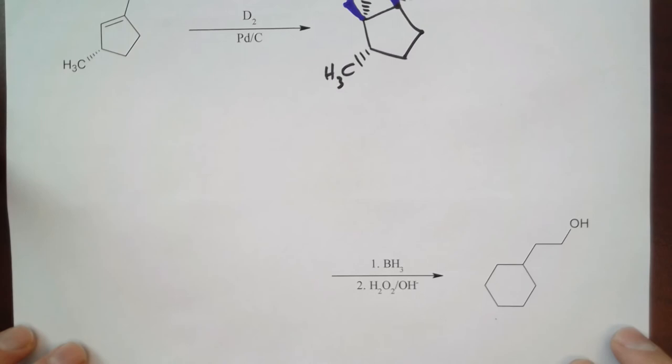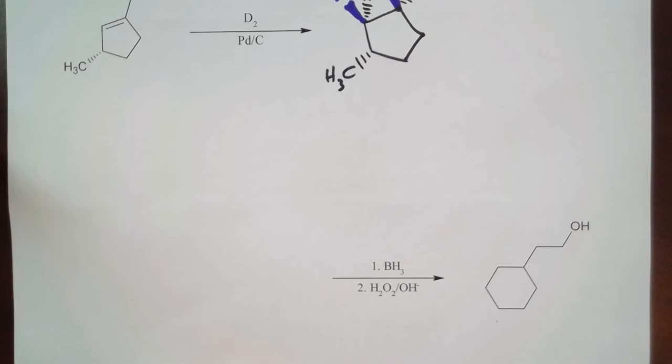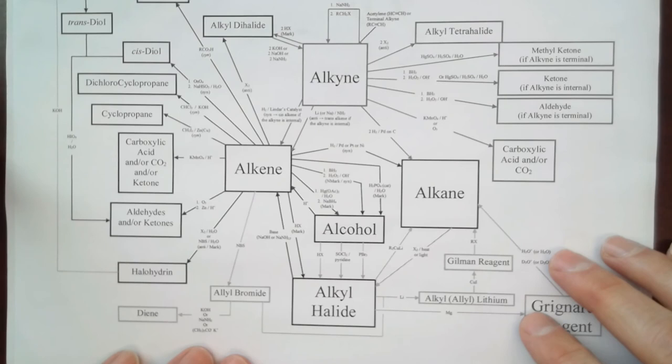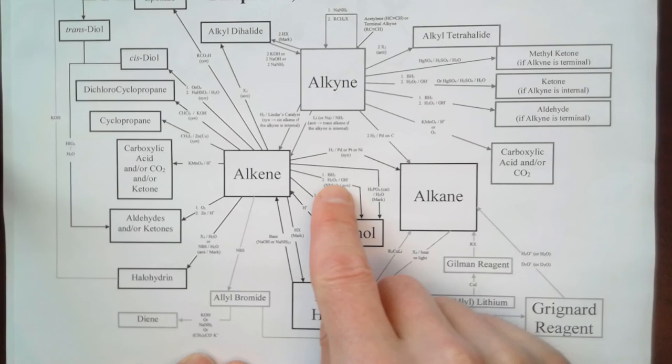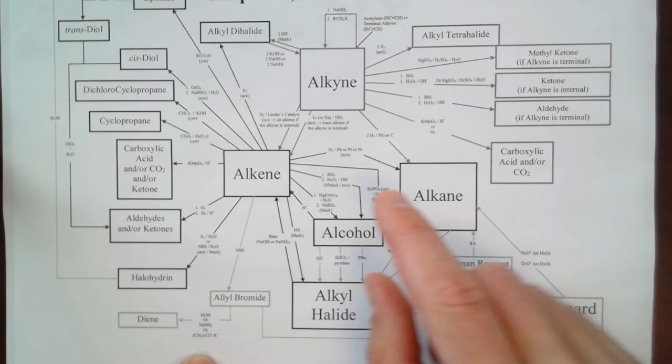In this fourth and final example we're given a product and we're asked what is the reactant, what alkene reacted to give me this product. Now notice that this is an alcohol. If we don't remember, we can go look on our reaction map and we've got alcohols here, and we can make alcohols with this path right here—the hydroboration, which gives us non-Markovnikov syn addition.